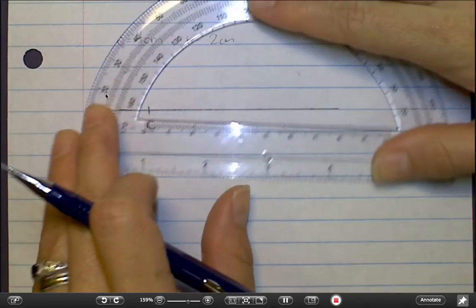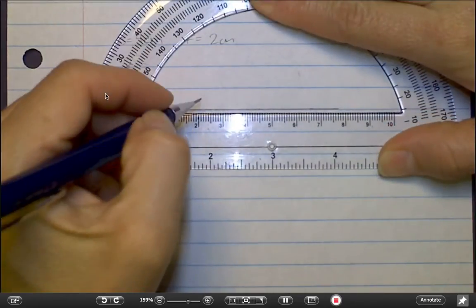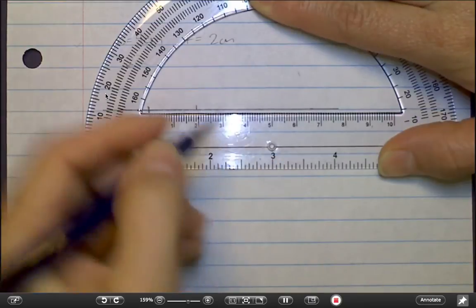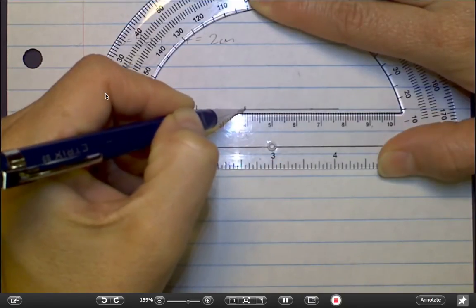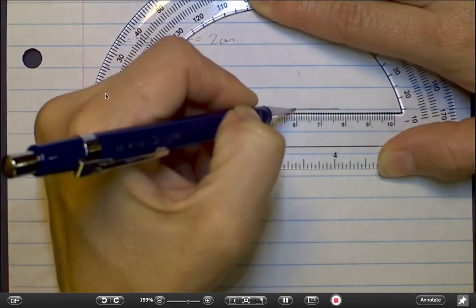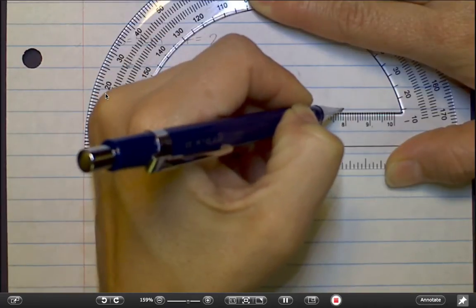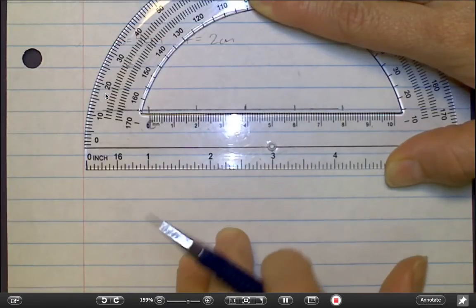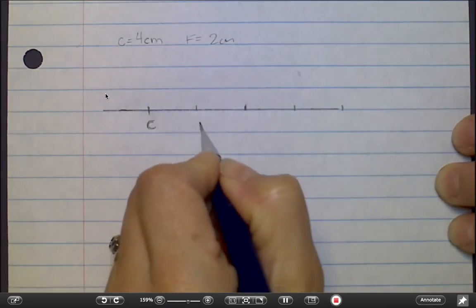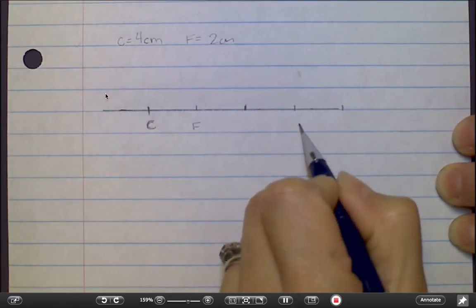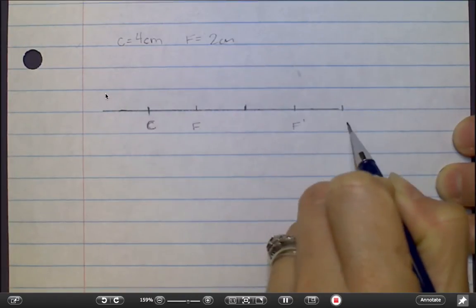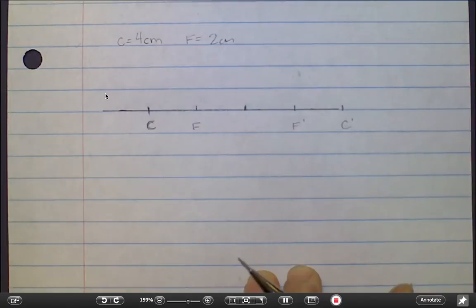Measuring from the center point, 2 centimeters away is the F, another 2 centimeters is the mirror, and these are the F and C behind the mirror. I'll label them F prime, C prime to let us know they're behind the mirror.